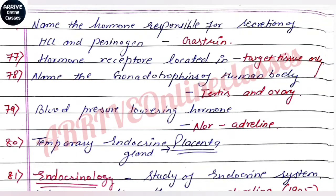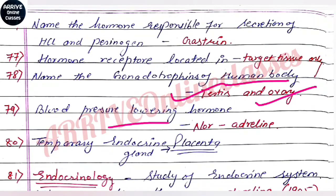Next: name the gonadotropin hormones of the human body. Gonadotropin hormones act on the gonads — the testis and ovary — two structures in our body. Non-adrenergic hormone is the blood pressure lowering hormone.